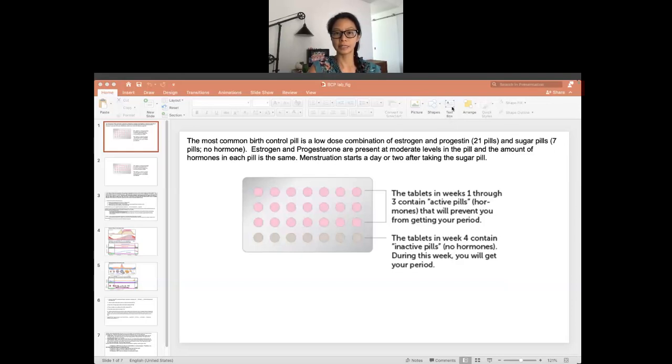So why do we want to talk about this? One is it allows us to really analyze our understanding of the normal cycle when you can look at how contraceptions alter the process. So when you can understand how it alters it, that truly tests to see if you understand how the whole menstrual cycle and the pathway works.